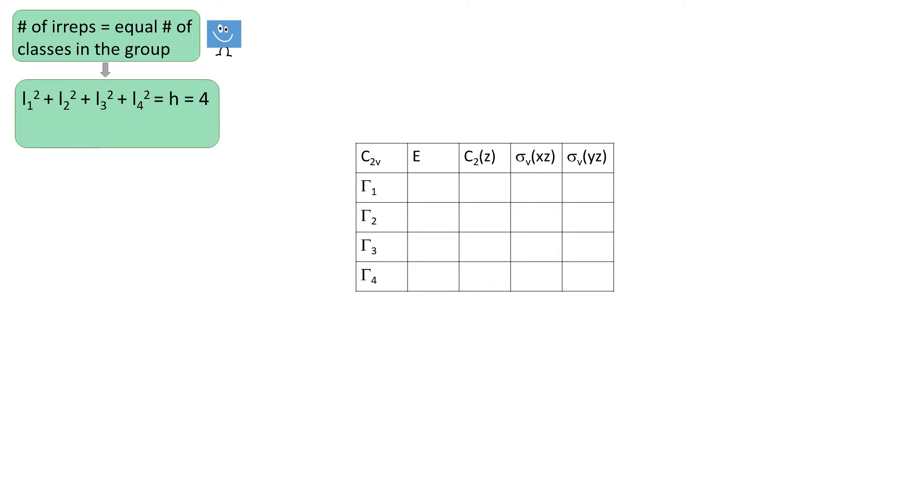Well, the rule 1 tells us that the sum of squares of the dimensions of these EREPs equals H. Also we know that each of the dimensions must be a positive integer. So the only solution to this equation is when all the dimensions are 1. This also tells us that the entries under E operation are 1 as well.